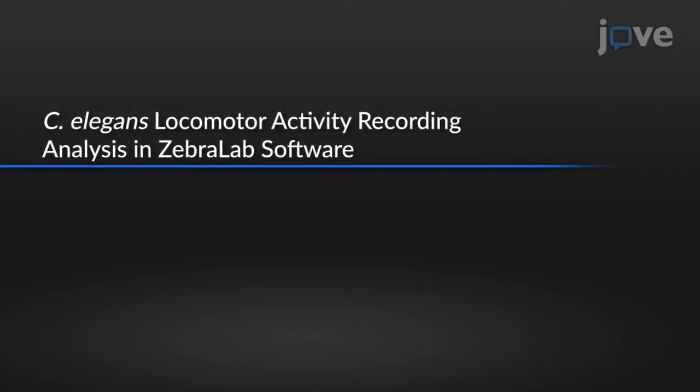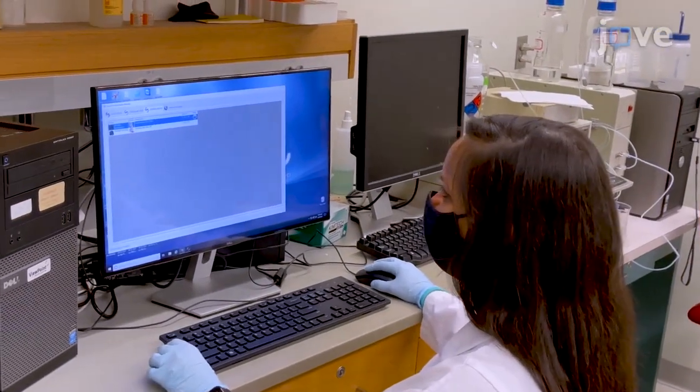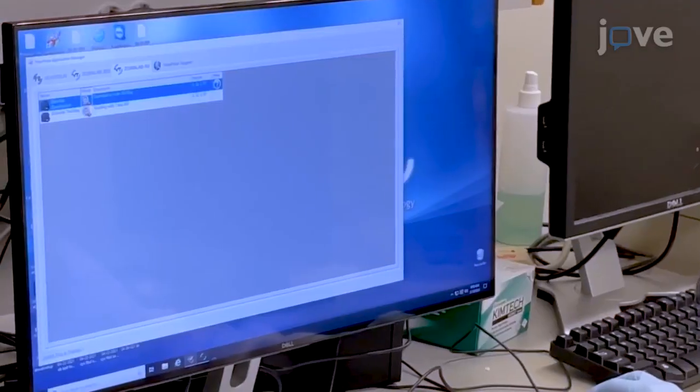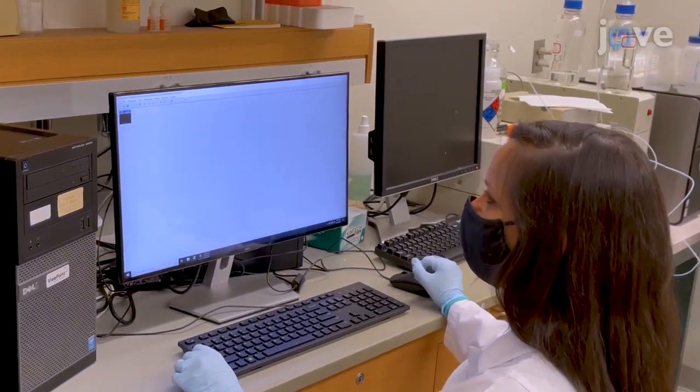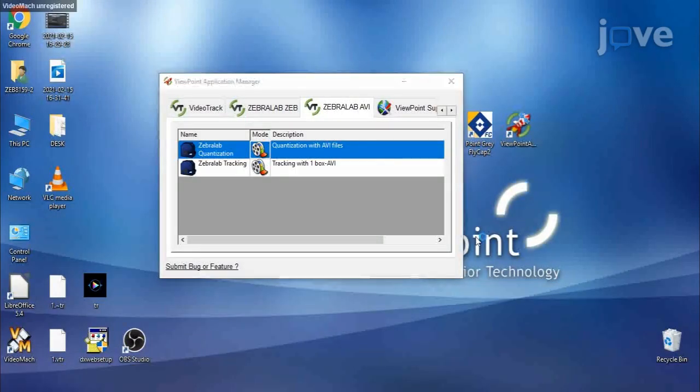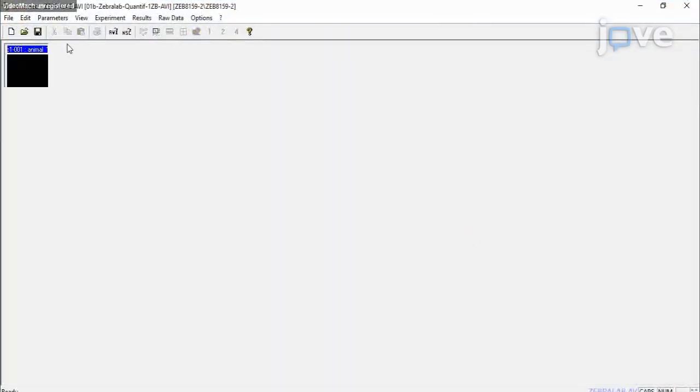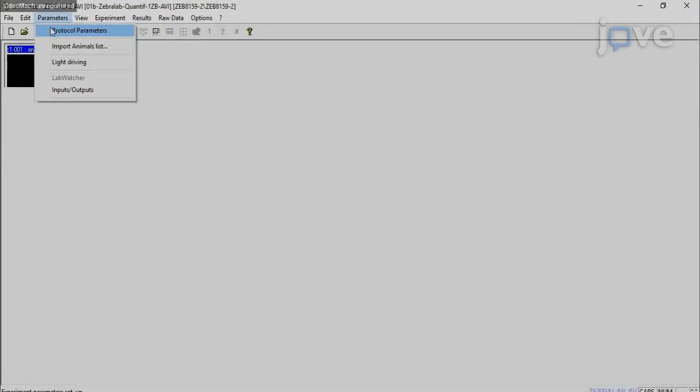To analyze the recorded C. elegans locomotor activity using Zebralab software, use the Zebralab AVI option to upload videos to the software. Click the Quantization with AVI files option. To create a new protocol, select parameters, protocol parameters, and time, and set the experiment to...